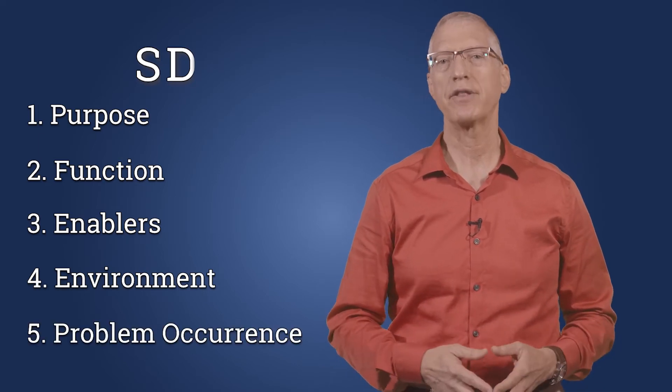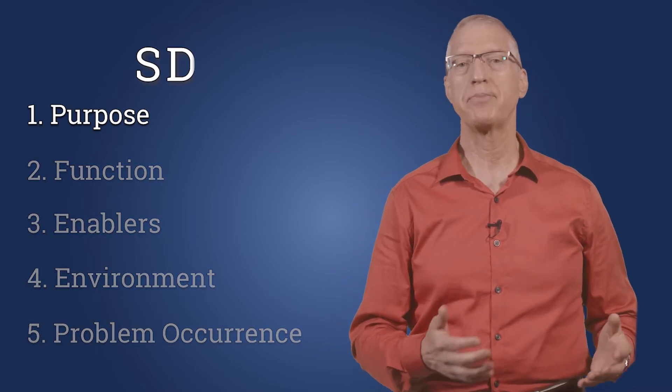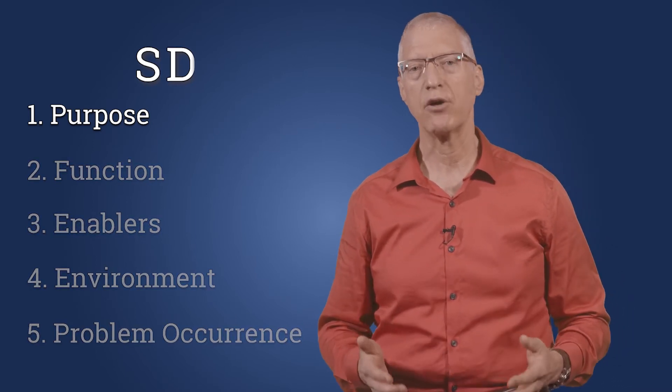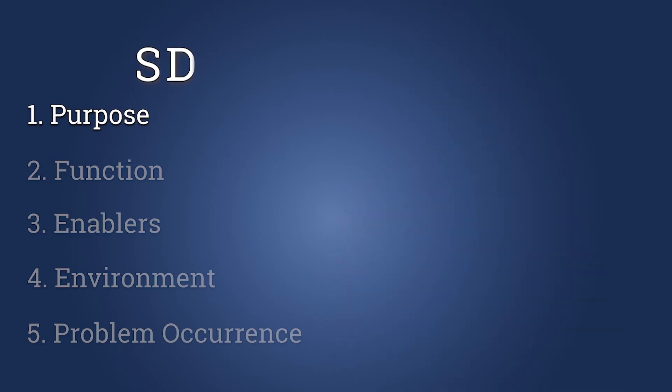The first component is the system's purpose. Who are the beneficiaries, the people for whom the system was developed? What benefit does the system provide to them? In our case, the purpose of the system is to provide people with fruit effortlessly.